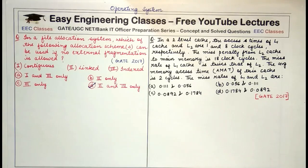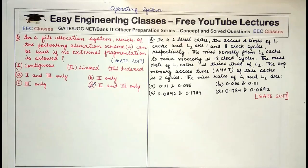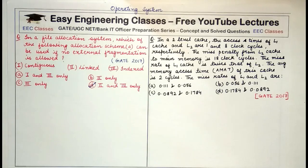In linked allocation, the first block allocated to a file is linked to the next block, which is linked to the third block, and so on. In indexed allocation, a special block in memory acts as an index block containing pointers to all blocks occupied by a file, where the i-th entry corresponds to the i-th block. In contiguous allocation, all blocks are allocated continuously — the entire process is given a single chunk.